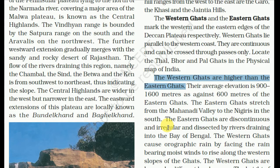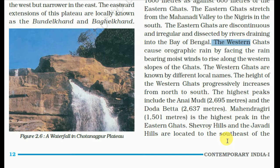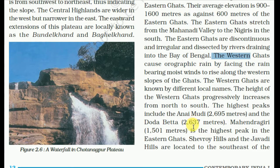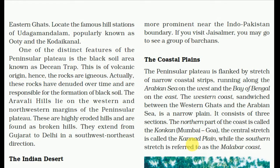The Eastern Ghats stretch from the Mahanadi Valley to the Nilgiris in the south. The Eastern Ghats are discontinuous and irregular, dissected by rivers draining into the Bay of Bengal. The Western Ghats cause orographic rain by forcing rain-bearing moist winds to rise along the western slope. The height of the Western Ghats progressively increases from north to south. The highest peaks include Anaimudi at 2,695 meters and Doddabetta at 2,637 meters. Mahendragiri at 1,501 meters is the highest peak in the Eastern Ghats. The Javadi hills and the Shevroy hills are located to the southeast of the Eastern Ghats.